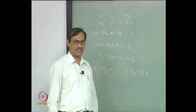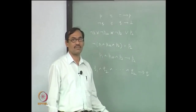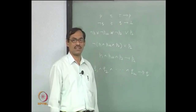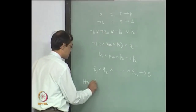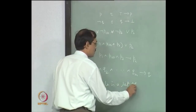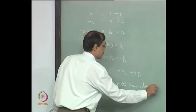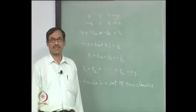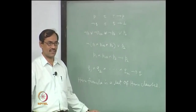Once you know what a Horn clause is, you take a Horn formula as a set of these Horn clauses. Instead of putting an and symbol — a conjunction of those — we just take a set of Horn clauses. So a Horn formula is a set of Horn clauses where those clauses are of the forms described. A set means they will be interpreted as ANDs, as earlier.